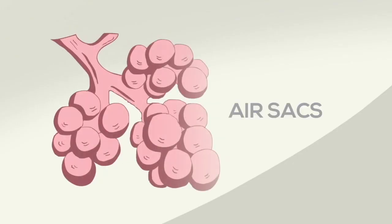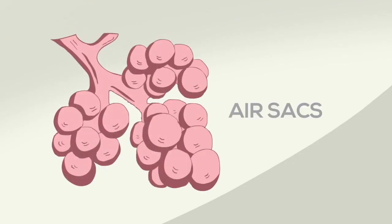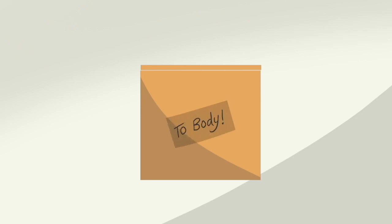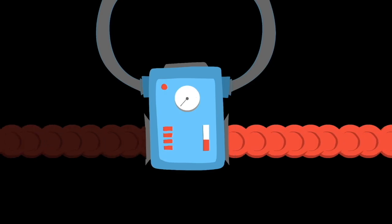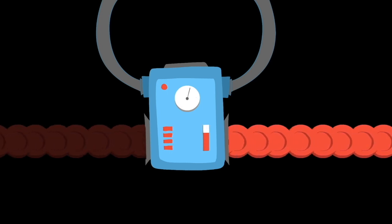At the end of each tube are small air sacs. They clean the blood from carbon dioxide and give it fresh oxygen. The blood then takes this oxygen to the rest of the body. These are like small factories that work all day and night. Millions of these factories work together.